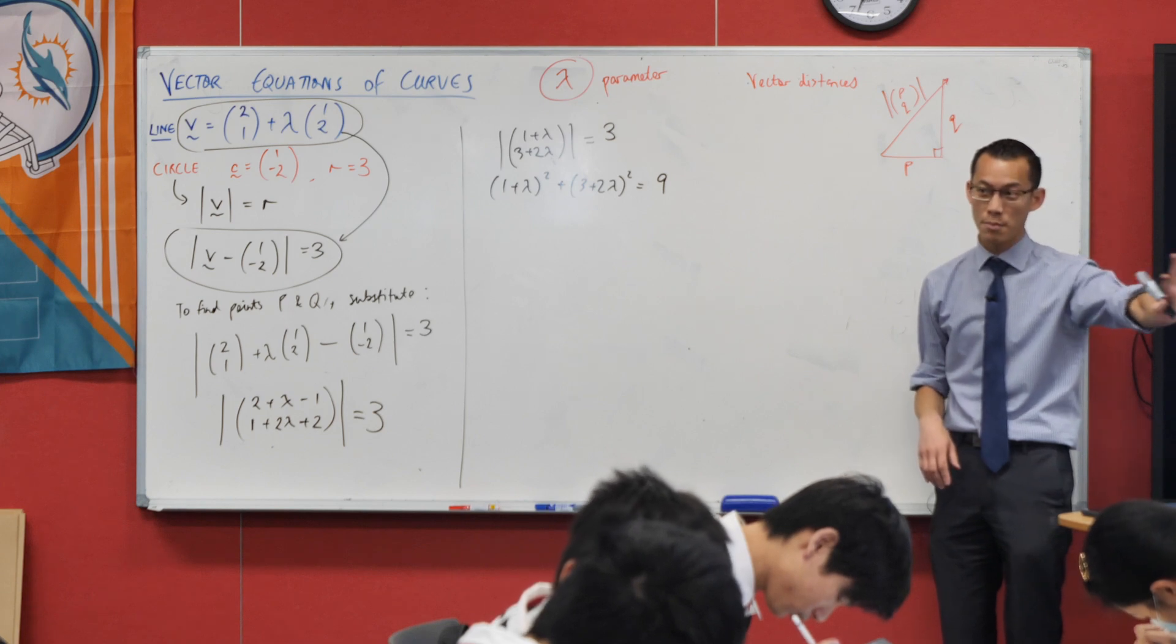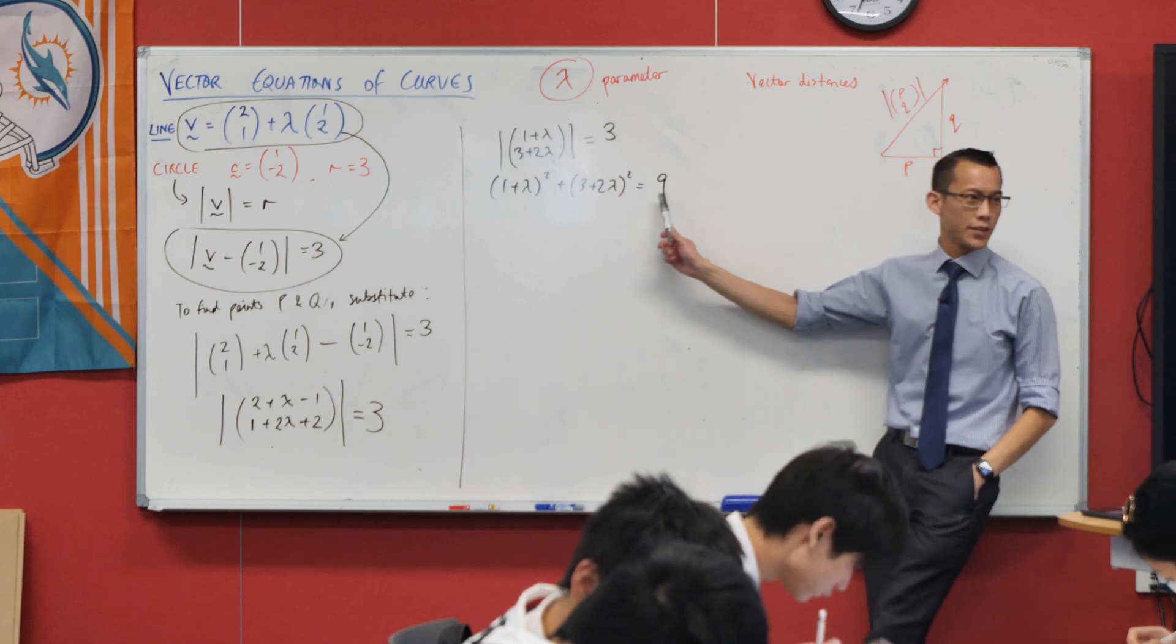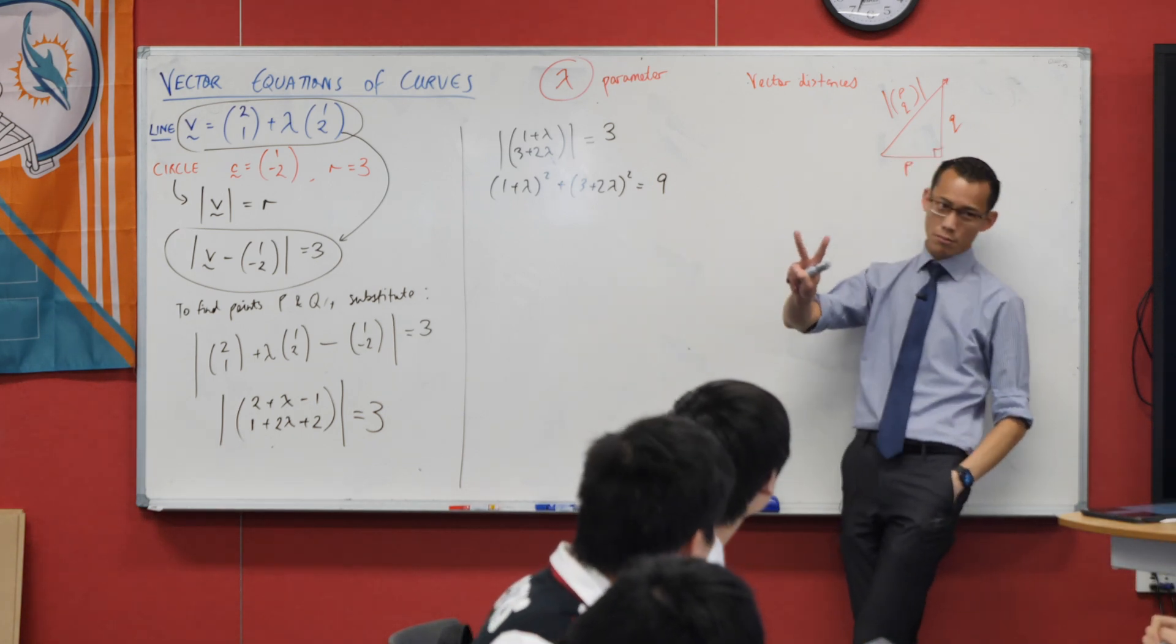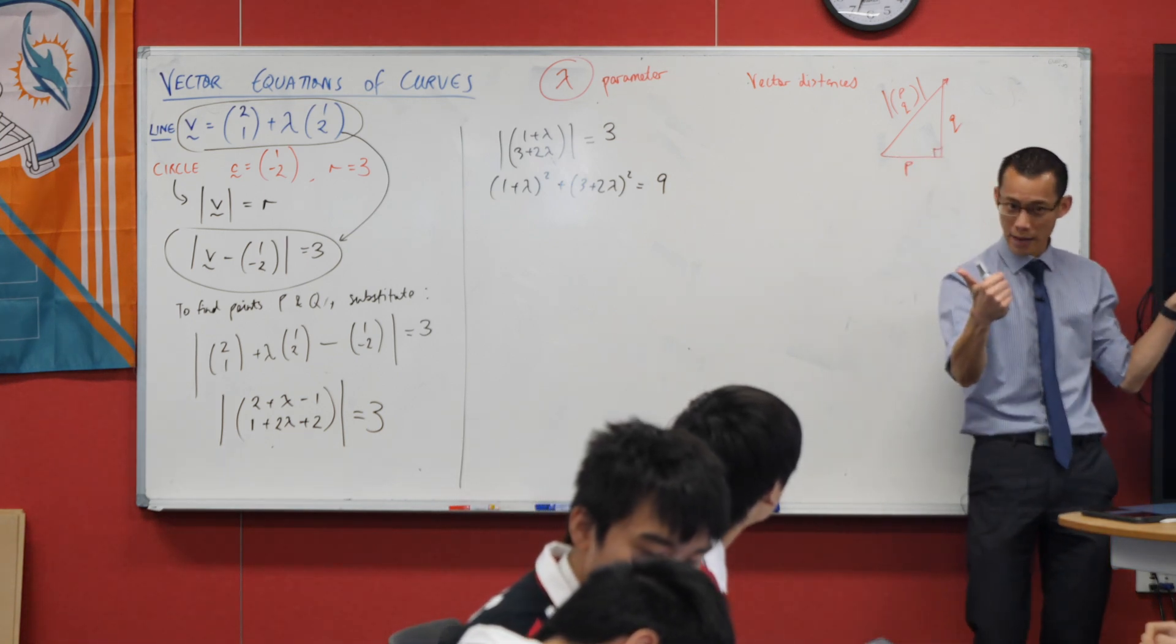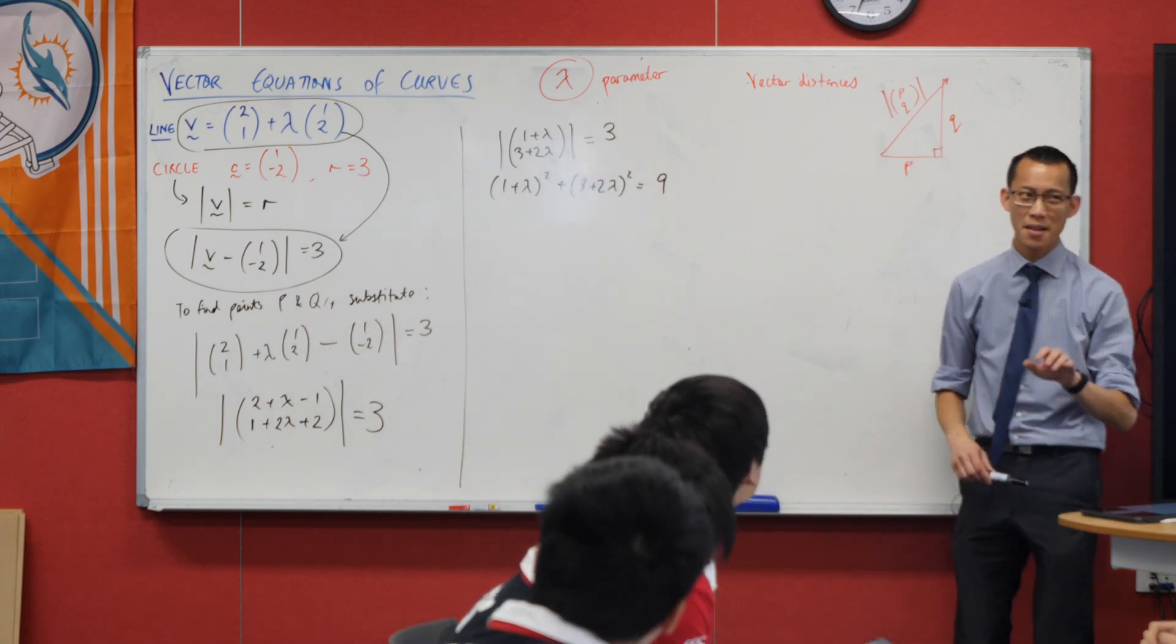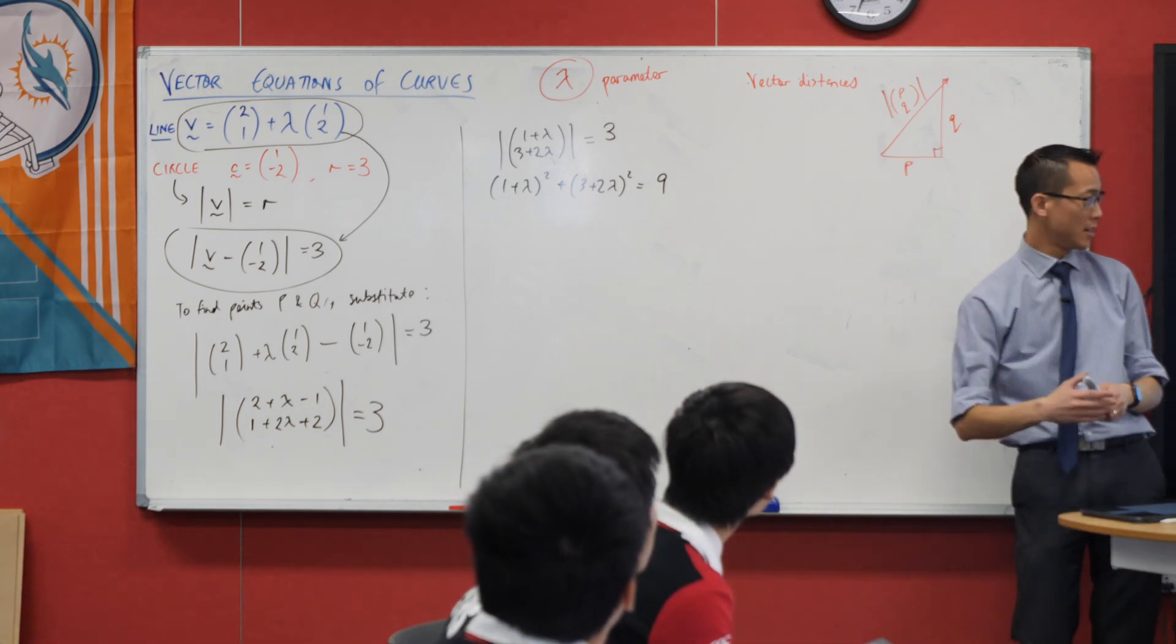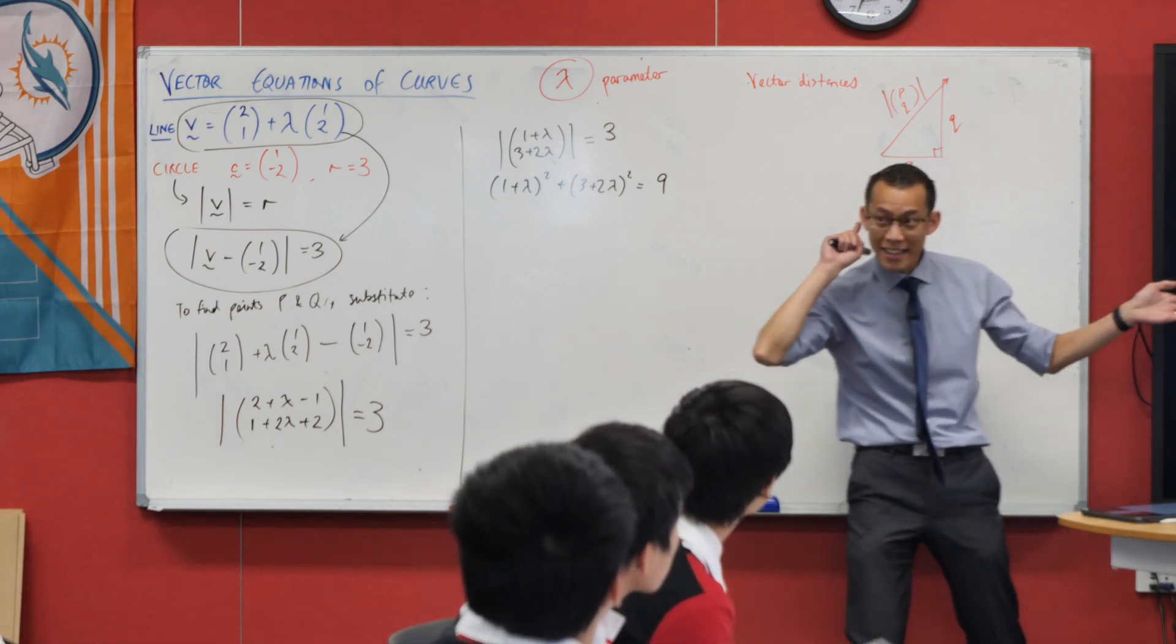But just before, I reckon you could sort of go and do this on your own. But just before I let you off, just to make it easier for you, if you solve this for lambda, what would you get? You get two values. Of course there should be two values. Why are there two values? Two points. One for P, one for Q. Now, I can go and find those, and then get where M is. But do I really need to? Is there a quicker way that can get me straight to where I want to go, which is M?